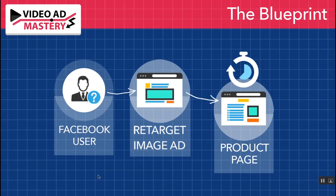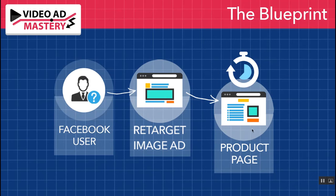That brings us to step three, where we have our Facebook user who, in the last three or four days, has seen our product detail page or our checkout page. They're scrolling through Facebook again and they see an image ad for our product — just a simple image ad using the exact product image from our product detail page. We basically just say, 'Hey, did you forget this?' and get the click back to our product page where we have the countdowns ticking down, and they make the purchase.